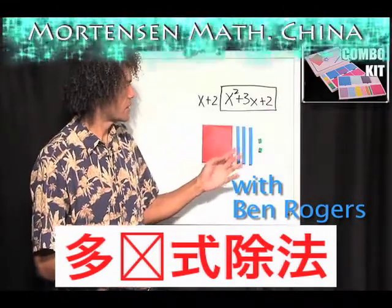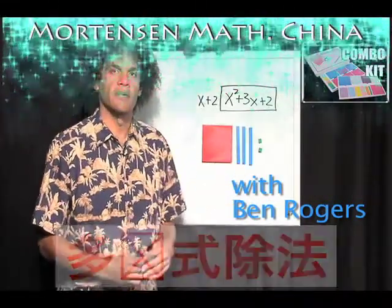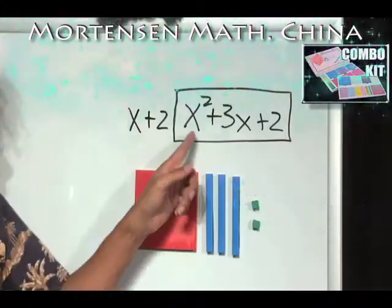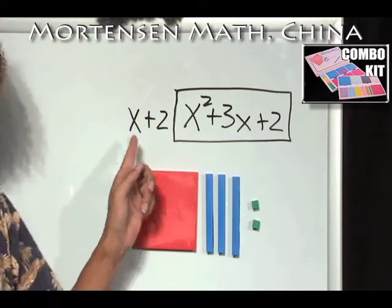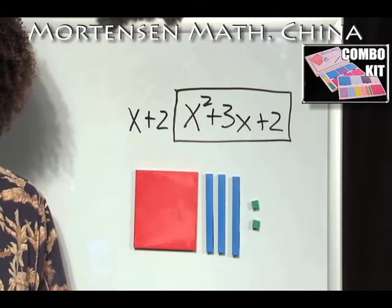What we have here is x squared, 3x, and 2, and I'm going to give you lots of information. I want you to make me a rectangle out of x squared, 3x, and 2, and I'm going to tell you that one side is x plus 2. Can you build me a rectangle like that?